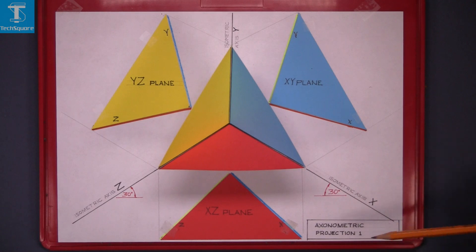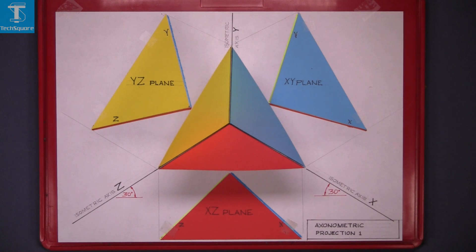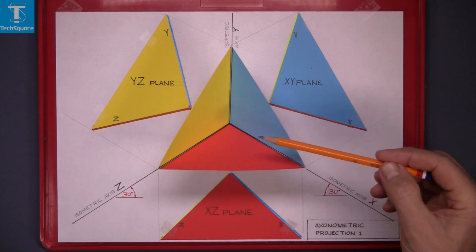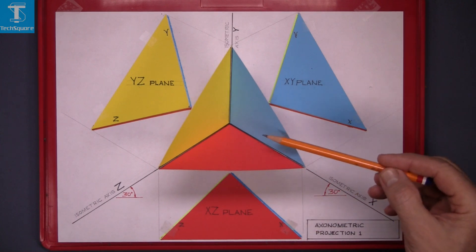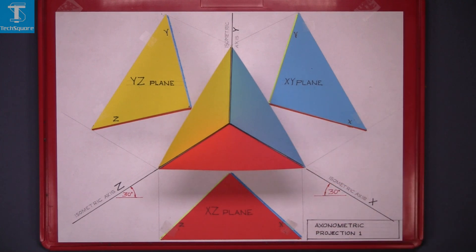Axonometric projection is a method of drawing an object in isometric without the use of isometric scale. The aim of this exercise is to explain the concept of axonometric projection and the terms associated with it.